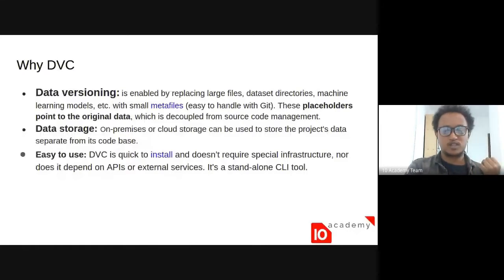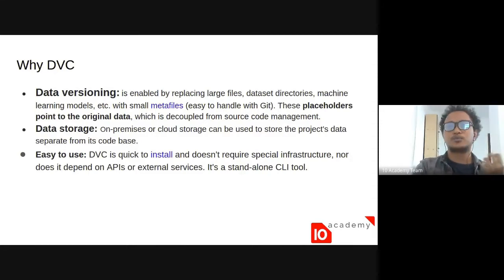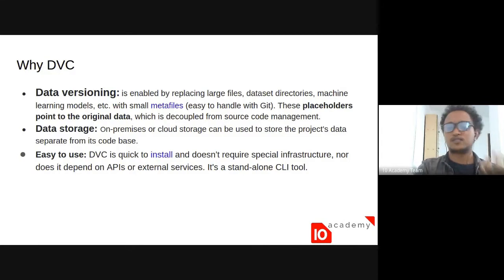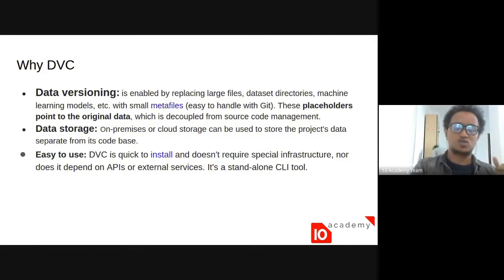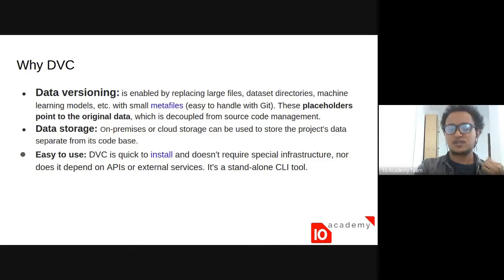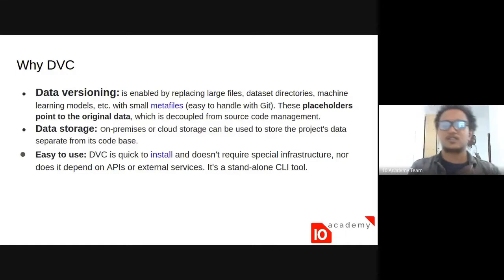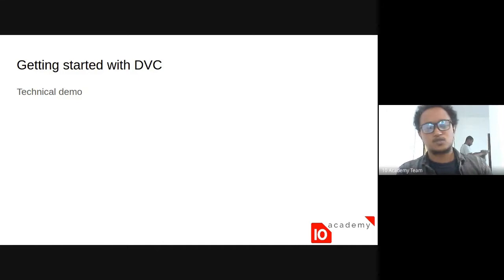Why use DVC? There are lots of reasons. The first major reason is data versioning — it is enabled by replacing large files, datasets, directories, or even machine learning models with small meta files that Git can actually handle. These act as pointers to the original data, creating a separation between source code and data. Another reason is data storage: on-premises or cloud storage can be used to store the project's data. We have options like Google Drive and Amazon S3. DVC is also very quick to install and does not require any special infrastructure or external APIs — it's a standard CLI tool.